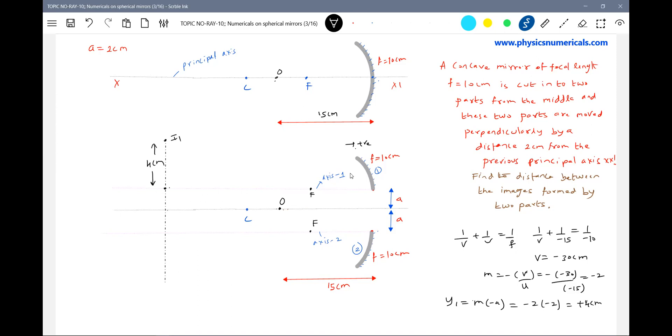Similarly, where is the image formed by this? It will be again at 30 centimeters. This will be the height of the object because the object is above the axis - above the axis here. So where is the image? The image should be below the axis, from here 4 centimeters.